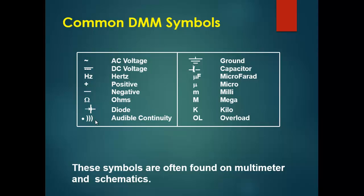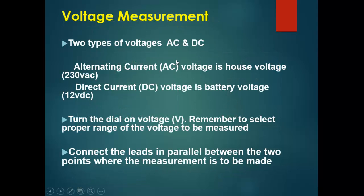There are two types of voltages: AC and DC. Alternating current voltage is like what we have in our house — 230 or 110 volt AC. DC voltage is similar to what we have on a battery, which is 12 volt DC.